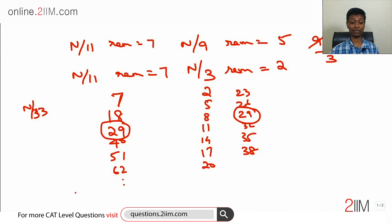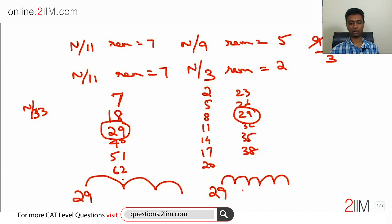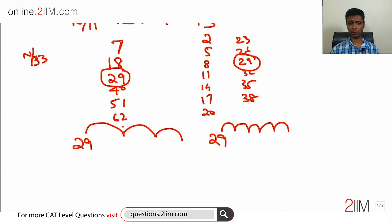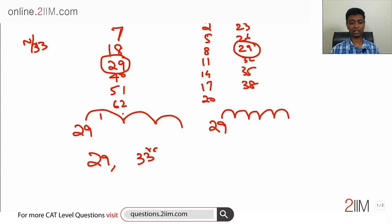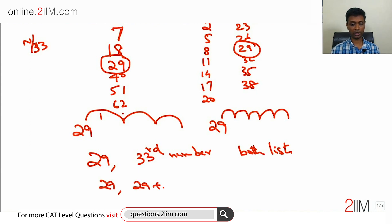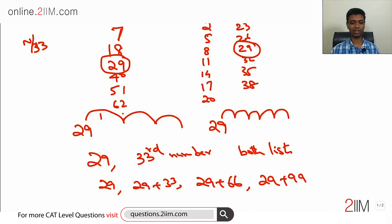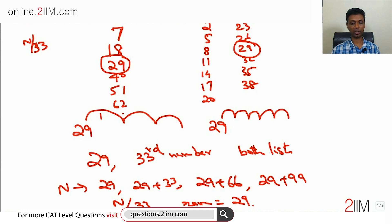I'm going to anchor the entire question from 29 onwards. From 29, every 11th number will be on the first list, and every 3rd number will be on the second list. So from 29, which numbers appear on both lists? From 29, every 33rd number will be on both lists — so 29, 29+33, 29+66, 29+99, and so on. If n is one of these numbers, then n÷33 remainder will be 29.